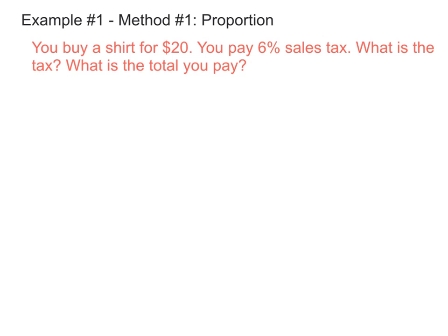Alright, our first example has you using a proportion. So it says you buy a shirt for $20, you pay 6% sales tax, and we want to know what is the tax and what's the total that you pay.